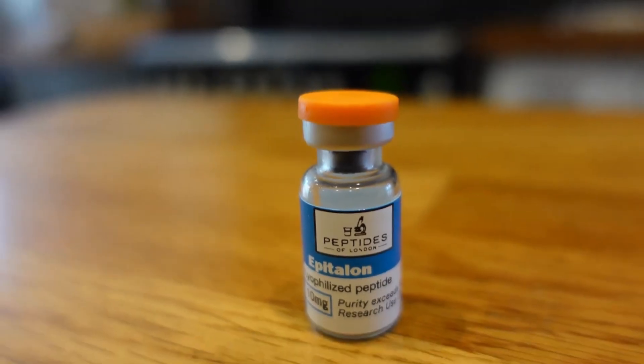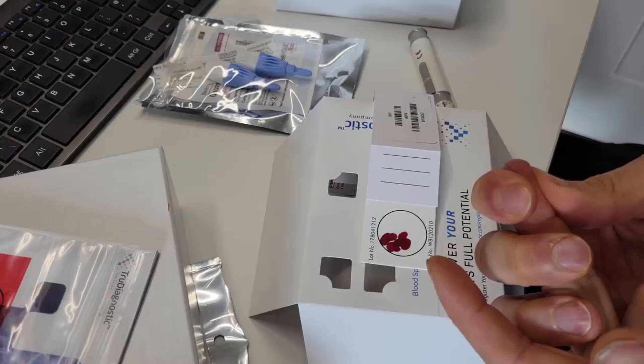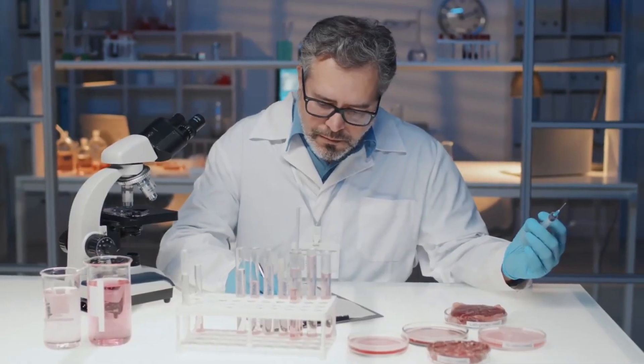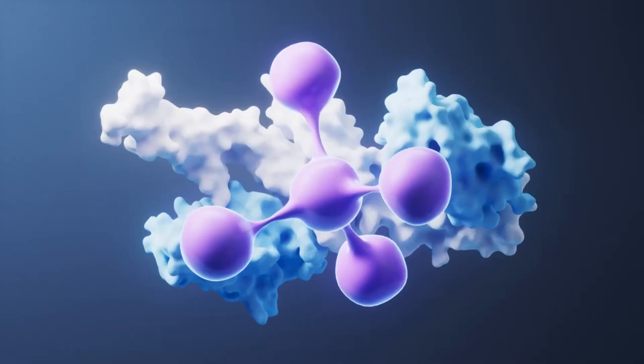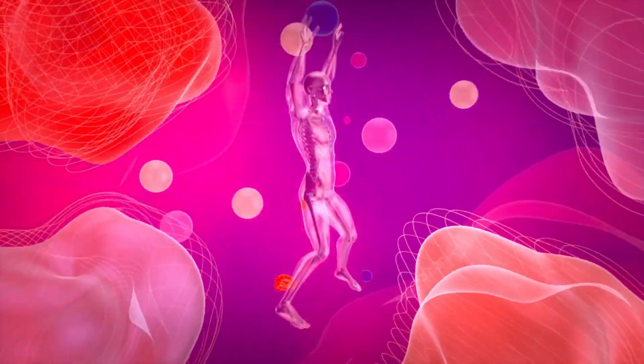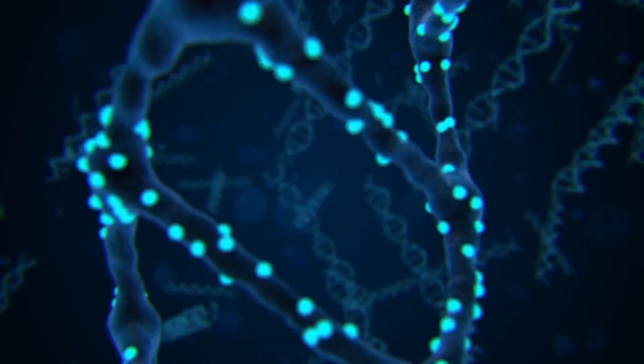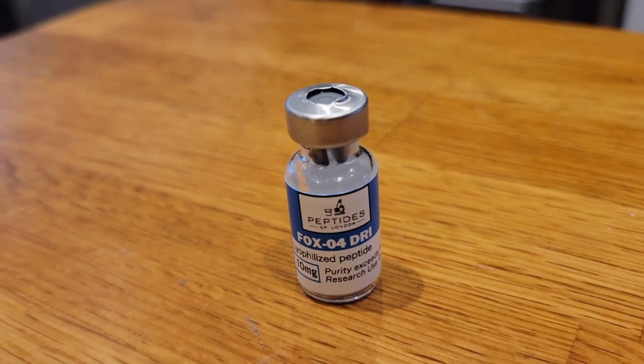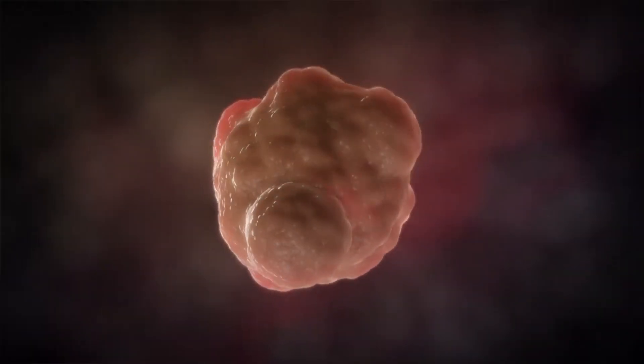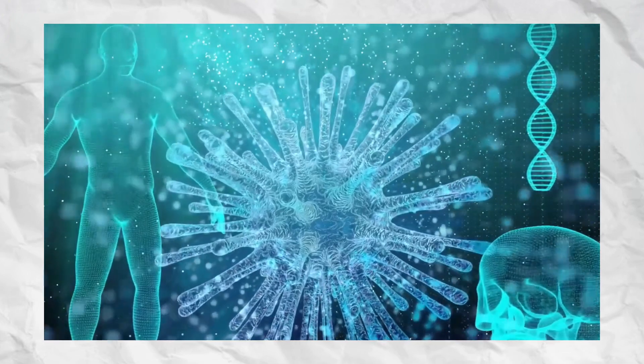Epithalon, also called epitalon, is a synthetic tetrapeptide derived from a natural pineal gland protein called epithalamin. It works primarily by activating telomerase, an enzyme that restores and lengthens telomeres, the protective DNA caps that shorten with age. Longer telomeres are associated with improved cell longevity and reduced cellular damage. Epithalon also helps regulate melatonin production, improving sleep cycles, immune function, and oxidative stress resistance.